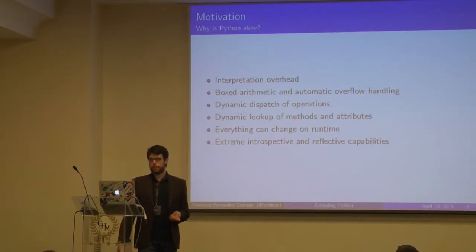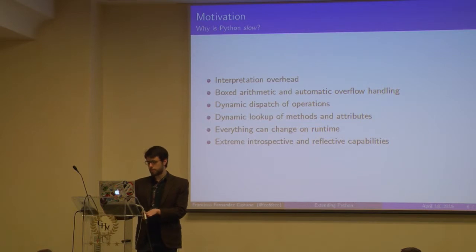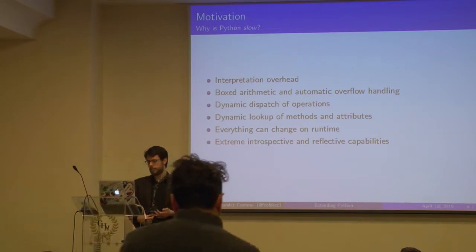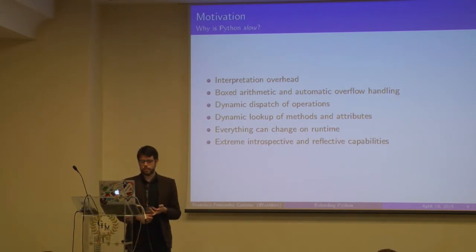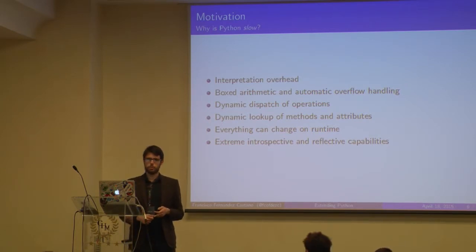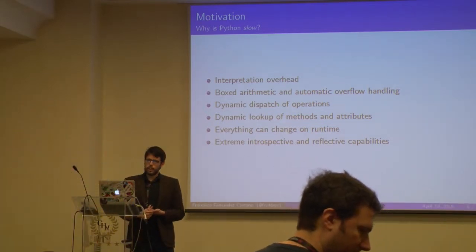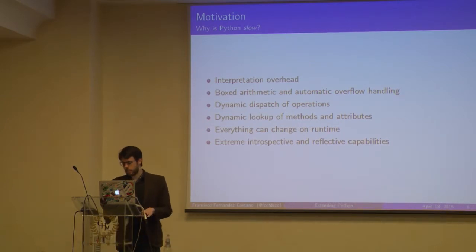Why is Python slow? There are a bunch of reasons. First, it's an interpreter language, so we have a huge overhead because of that — I'm talking now about only CPython. We also have boxed arithmetic; we don't have to take care about overflows, the interpreter does it for us. All operators and operations are dispatched dynamically, so each time we have to look up a method we incur more overhead. Python is an extremely dynamic language, so everything can change during runtime. This dynamism is good for us, but everything has trade-offs.